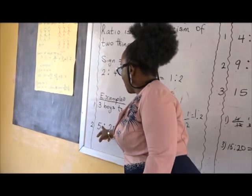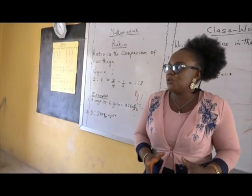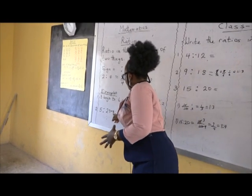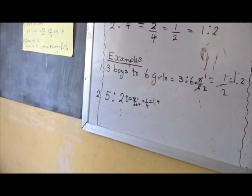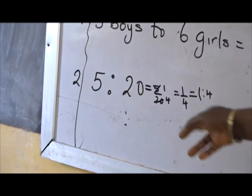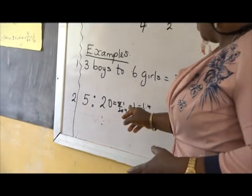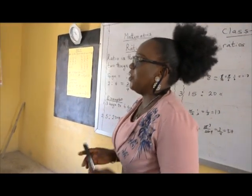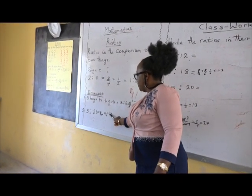Example two: we have five ratio twenty. We write it as five over twenty. We divide by five: five in five is one, five in twenty is four. We have one over four. Written as ratio: one ratio four.